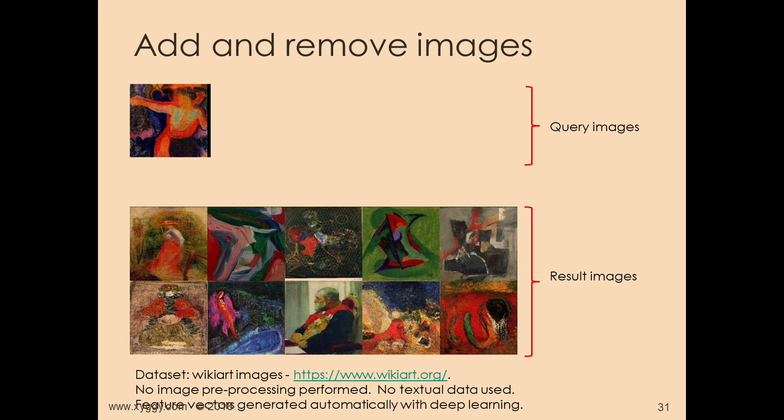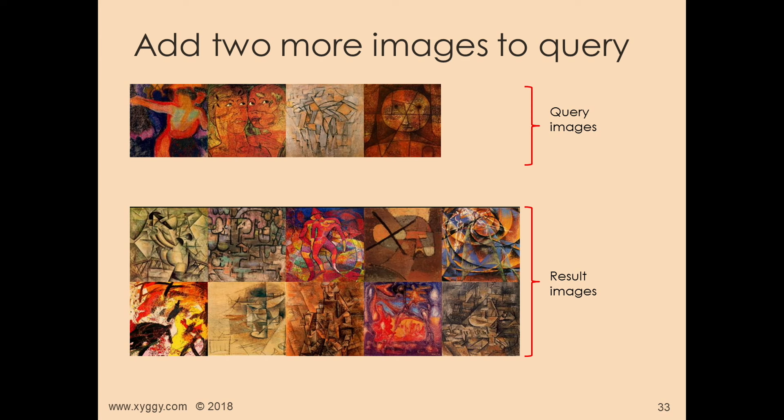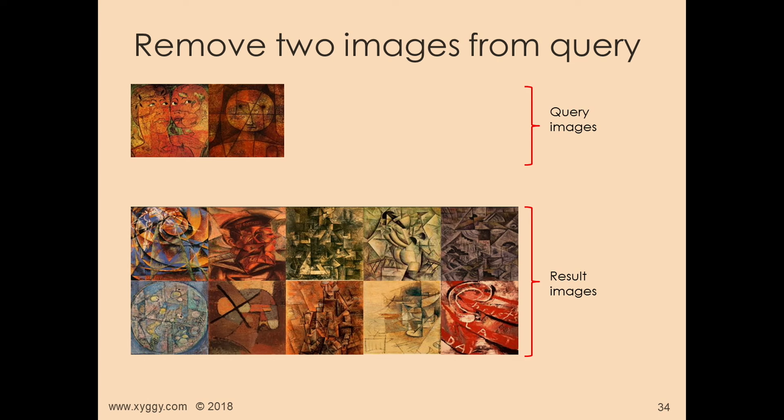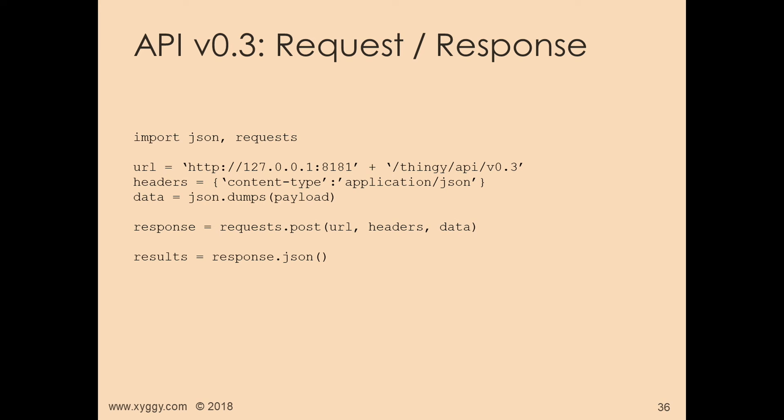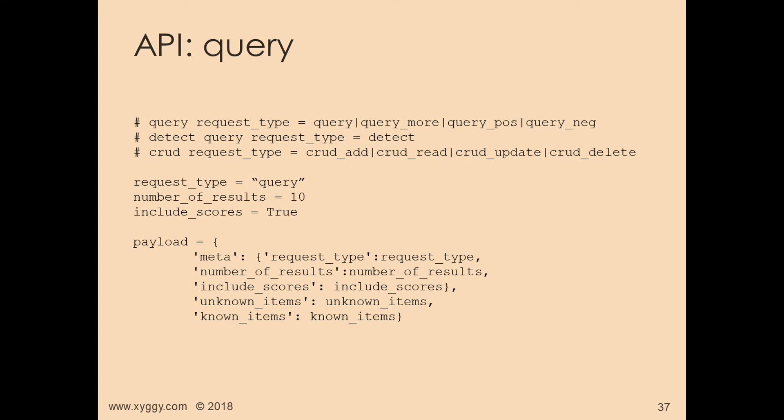We start with one image, add a second, add two more, take two away — take as many as you want away. The results change each time. The API is a kind of standard Python API, nothing too clever. Right now we have query request types for query, query more, query positive, and query negative. You enter the request type, the number of results you want back, whether you want the scores — that makes up the payload.